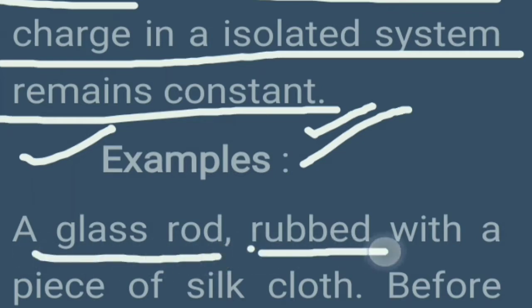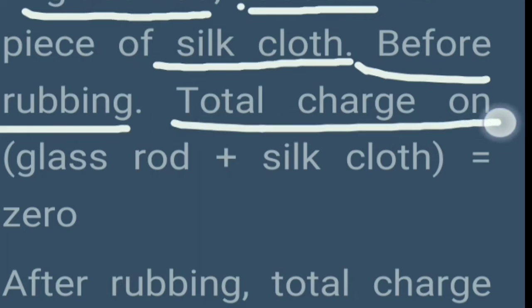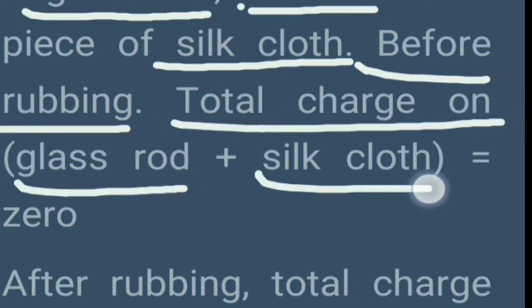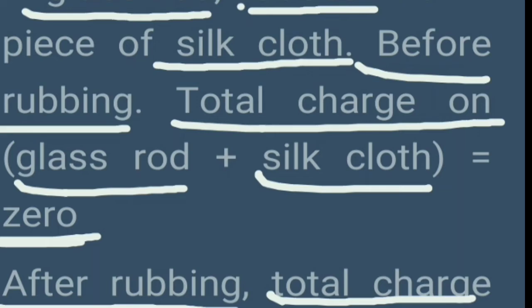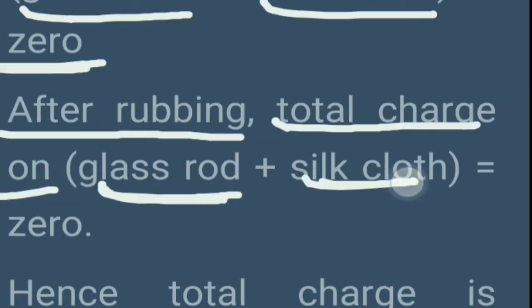आपने उसको silk cloth के साथ rub किया। Rub करने से पहले देखते हैं कि उसके ऊपर कितना charge है। Before rubbing: glass पे total charge 0 था, silk पे भी 0 था — क्योंकि हम rub करने से पहले की बात कर रहे हैं। इसलिए total charge 0 हो गया। After rubbing: total charge on glass plus silk is equivalent to 0।